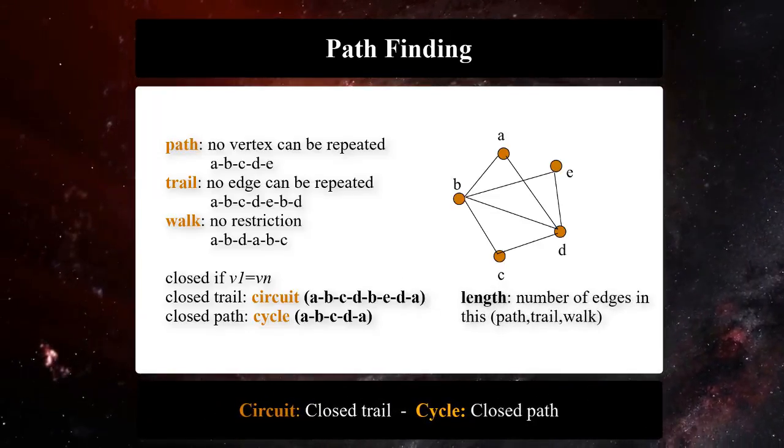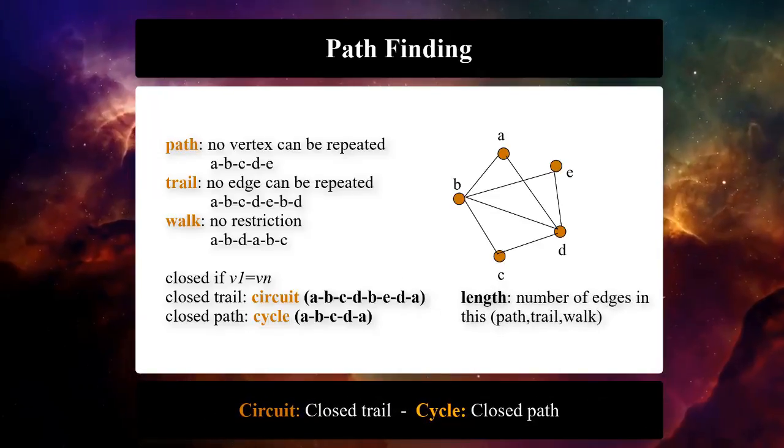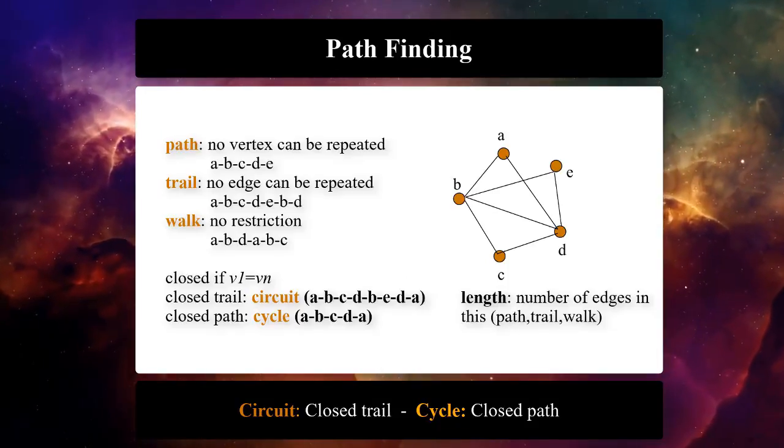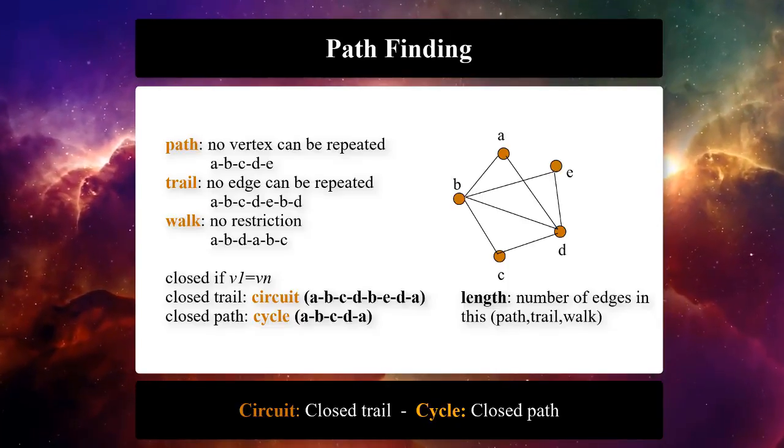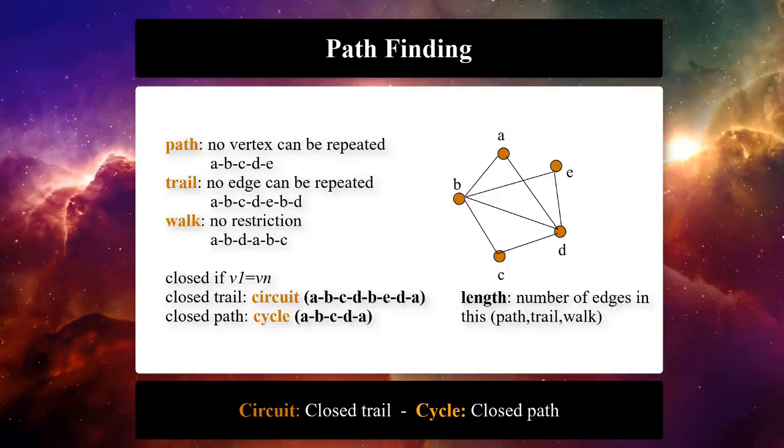Circuit is a closed trail and cycle is a closed path. We call a graph cyclic if it contains any cycle, otherwise we call it an acyclic graph.